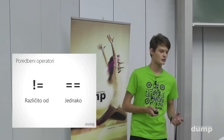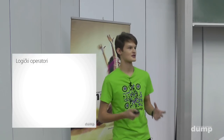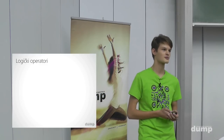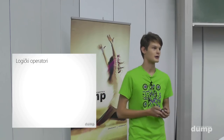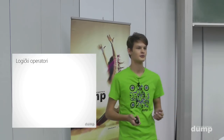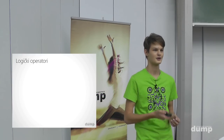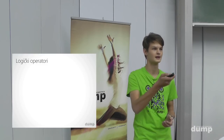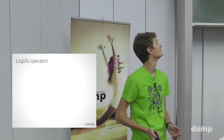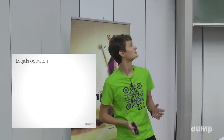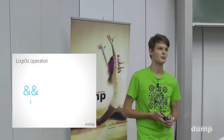U programiranju, nizanje uvjeta zna biti komplicirano i nečitljivo — možemo se lako zbuniti. Zato imamo logičke operatore. Zna li netko koji su logički operatori? Ima ih tri. To su: i, ili i ne.